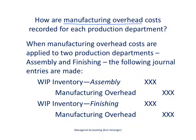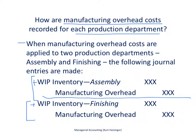Lastly, we'll look at the third production cost — manufacturing overhead — and how we record those in each production department. Similar to direct materials and direct labor, as each production department incurs overhead costs, or as overhead costs are applied to each department, we make an entry that increases work in process inventory for the assembly department for the manufacturing overhead costs incurred by that department. Likewise, for the finishing department, we increase work in process inventory for the manufacturing overhead costs incurred there as well.